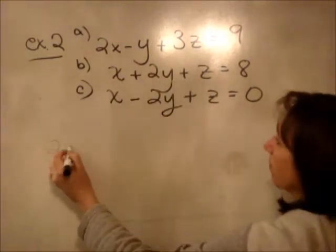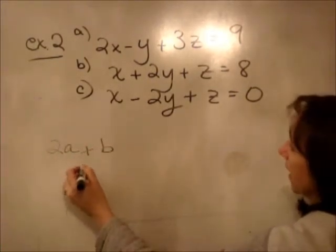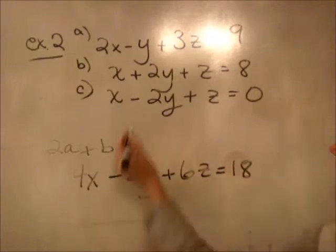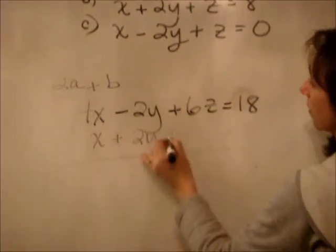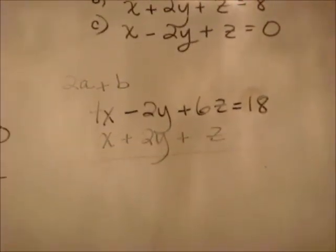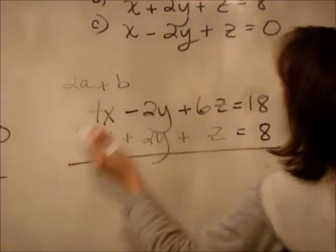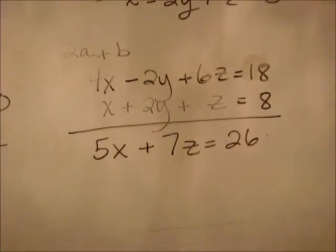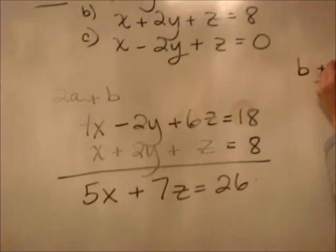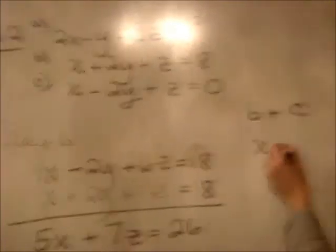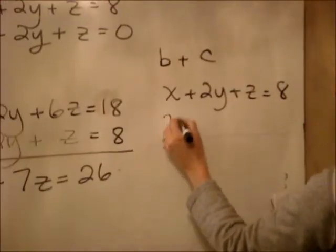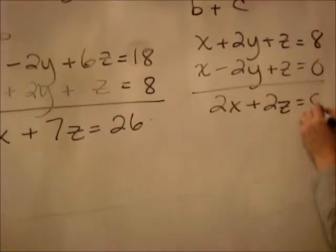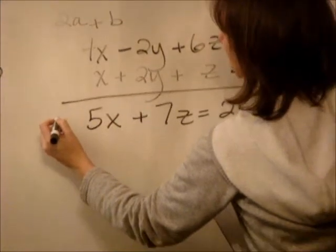So I'm going to take equation a times 2 and add it to b. We get 4x minus 2y plus 6z equals 18, and add it to b: x plus 2y plus z equals 8. Adding those together we get 5x plus 7z equals 26. Now I take b and c and add them together since the y's are already opposites: x plus 2y plus z equals 8, plus x minus 2y plus z equals 0. That gives us 2x plus 2z equals 8. We'll call these d and e.